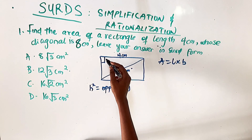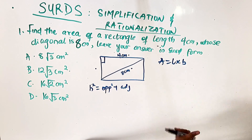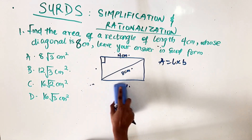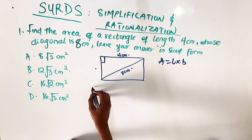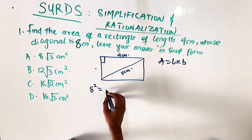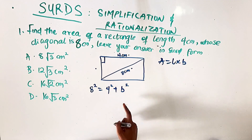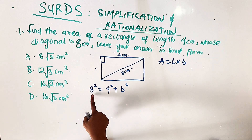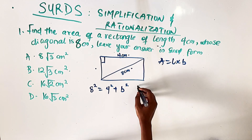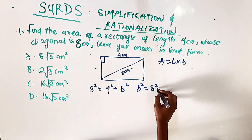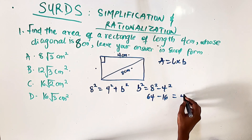The diagonal is our hypotenuse, and the sides are the opposite and adjacent. Applying that rule: eight squared equals four squared plus b squared. Subtracting four squared from both sides gives b squared equals eight squared minus four squared, which is 64 minus 16, giving us 48.